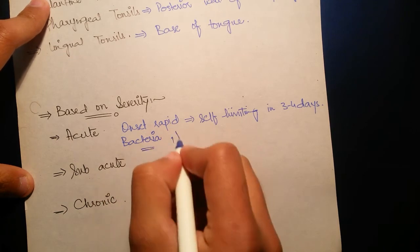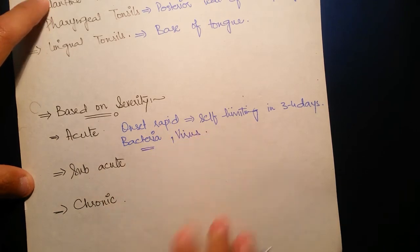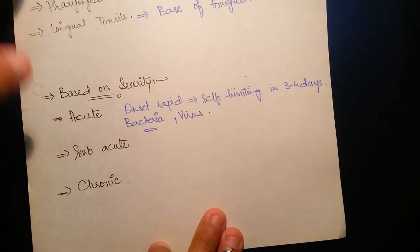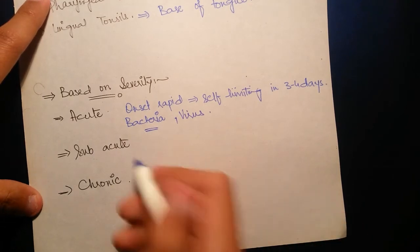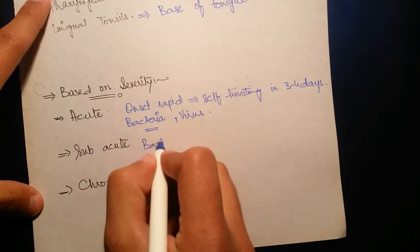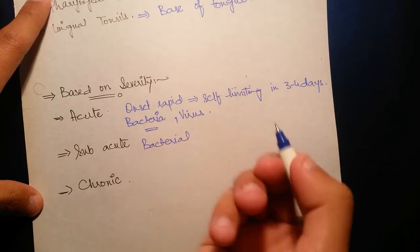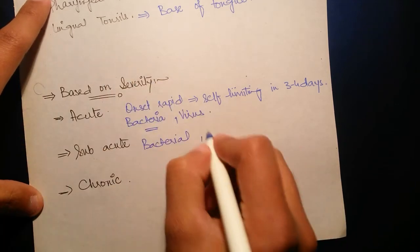The second one is sub-acute tonsillitis. It is mostly of bacterial origin and it is more bothersome and continues for seven to eight days or more.